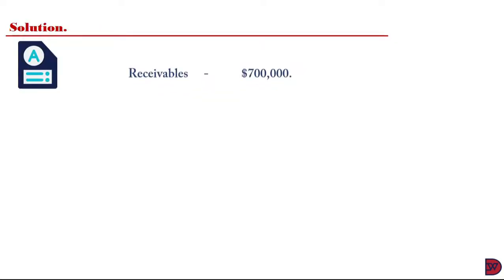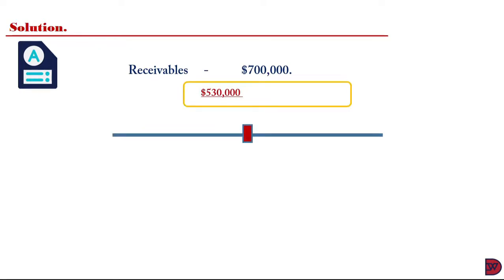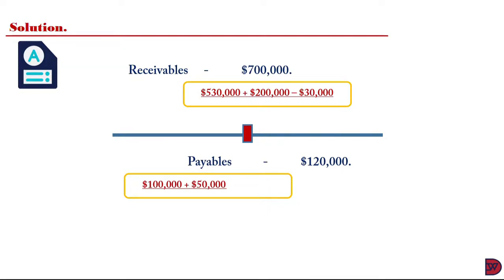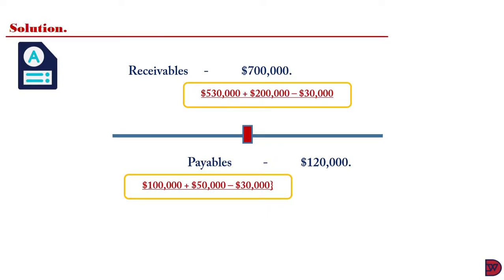For the solution, receivables to be consolidated will be $700,000 made up of $530,000 for Ian, $200,000 of receivables for Maggie, then we less the $30,000 which Ian is expecting Maggie to pay to him. When we come to the payables, it will provide a figure of $120,000 which is $100,000 for Ian, $50,000 for Maggie, then we less the $30,000 which Maggie is expected to pay to Ian.